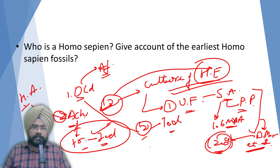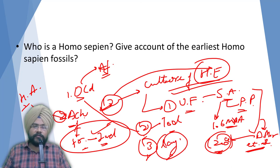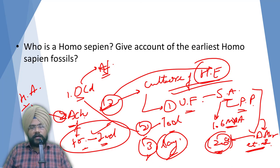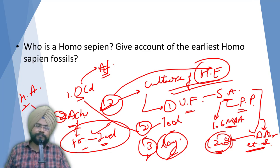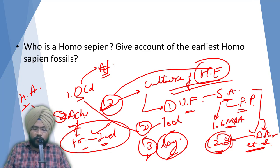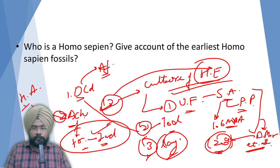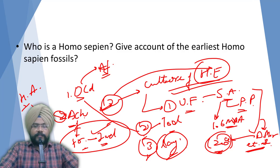The third thing you can write is language. There was proper use of language in Homo erectus culture - this is also important to include. So use of fire, tool culture, and language are the three key elements of Homo erectus culture. If you have any doubt or query, write in the comment section, do subscribe to the channel. Thank you very much.